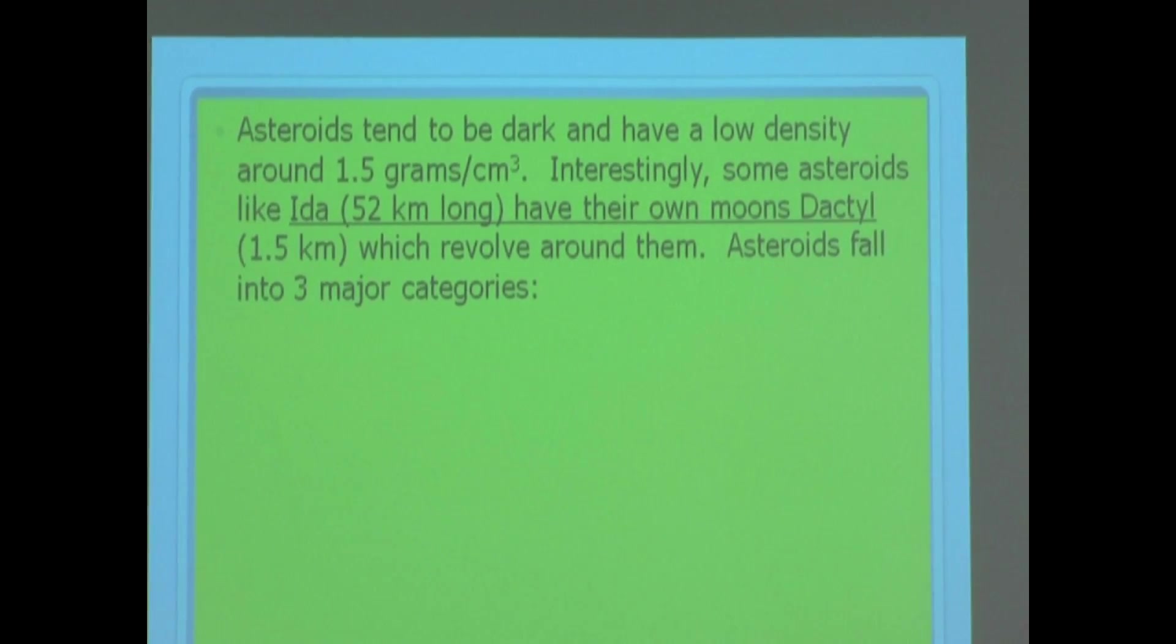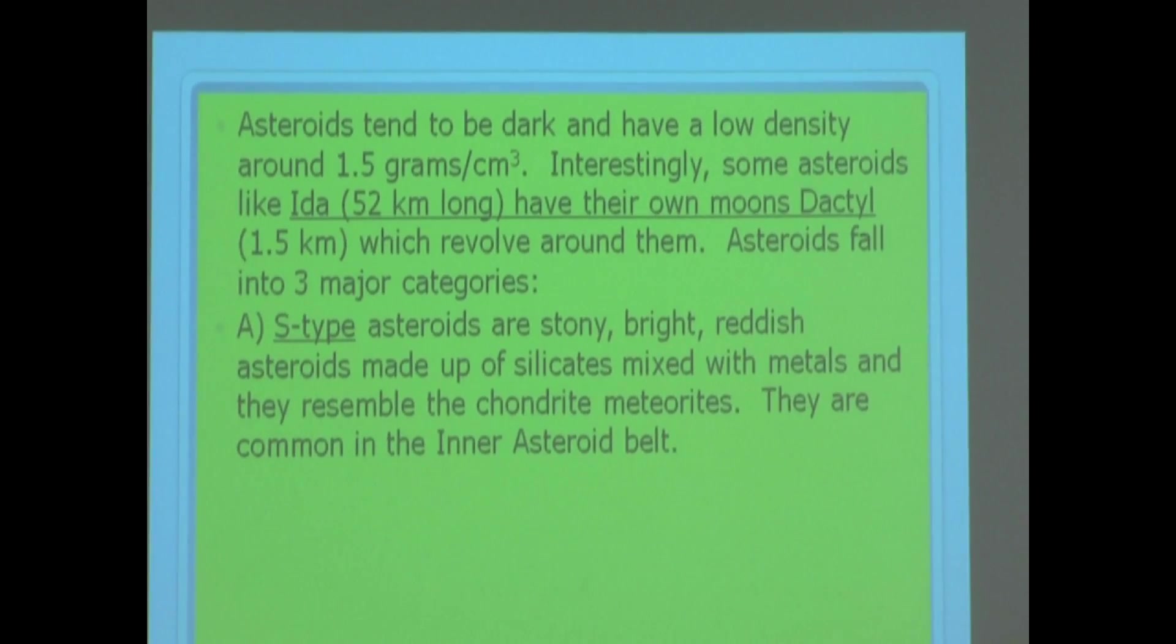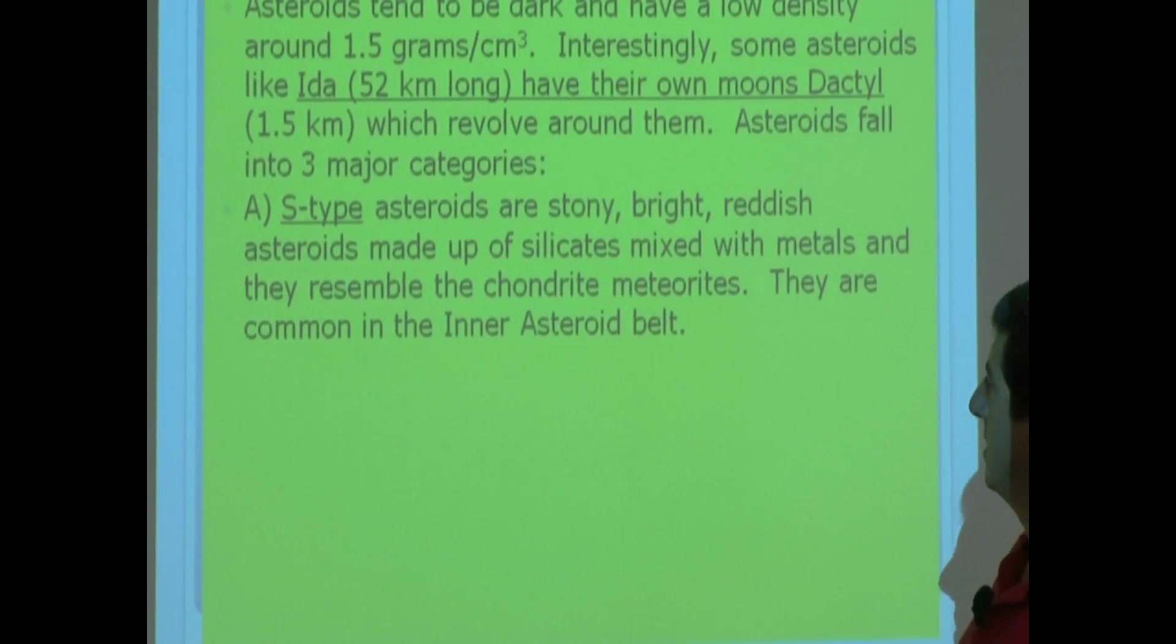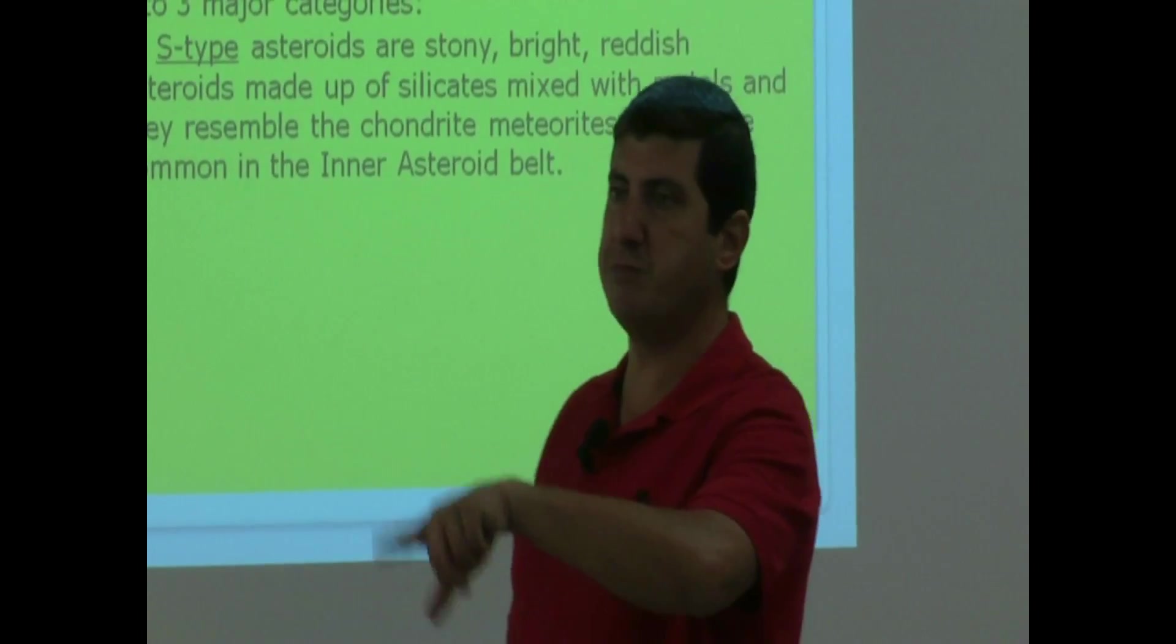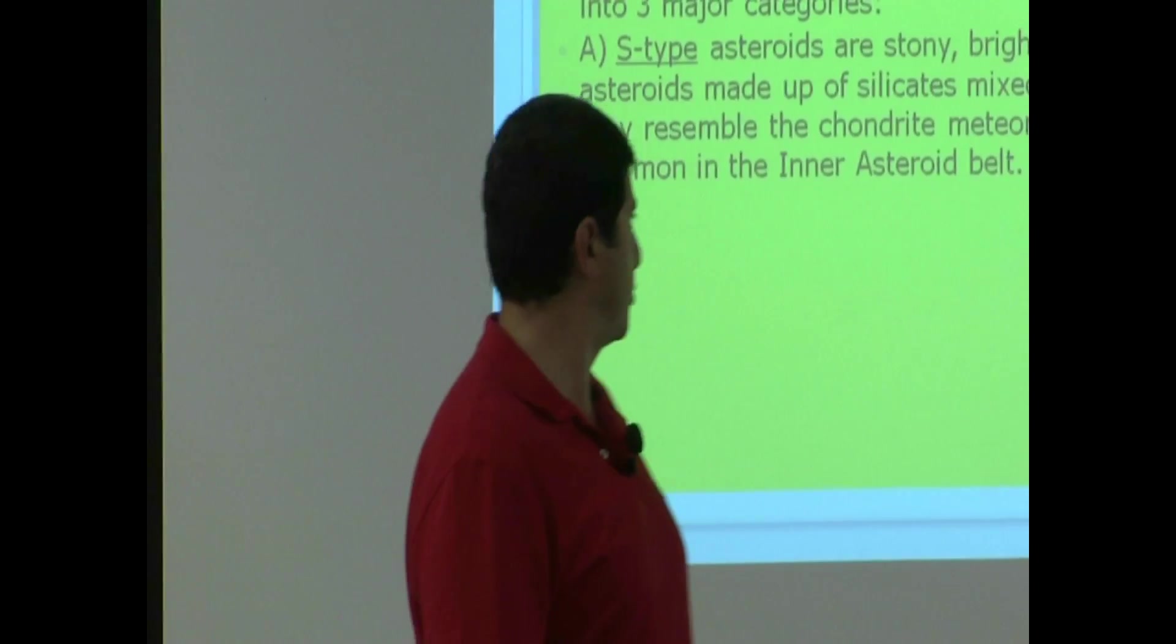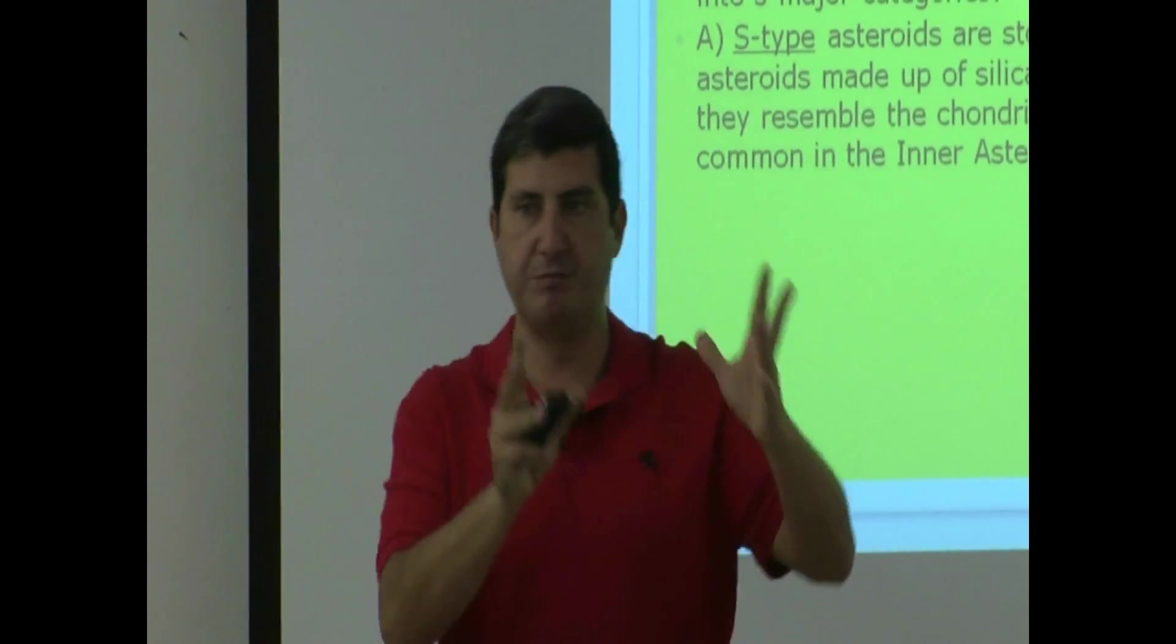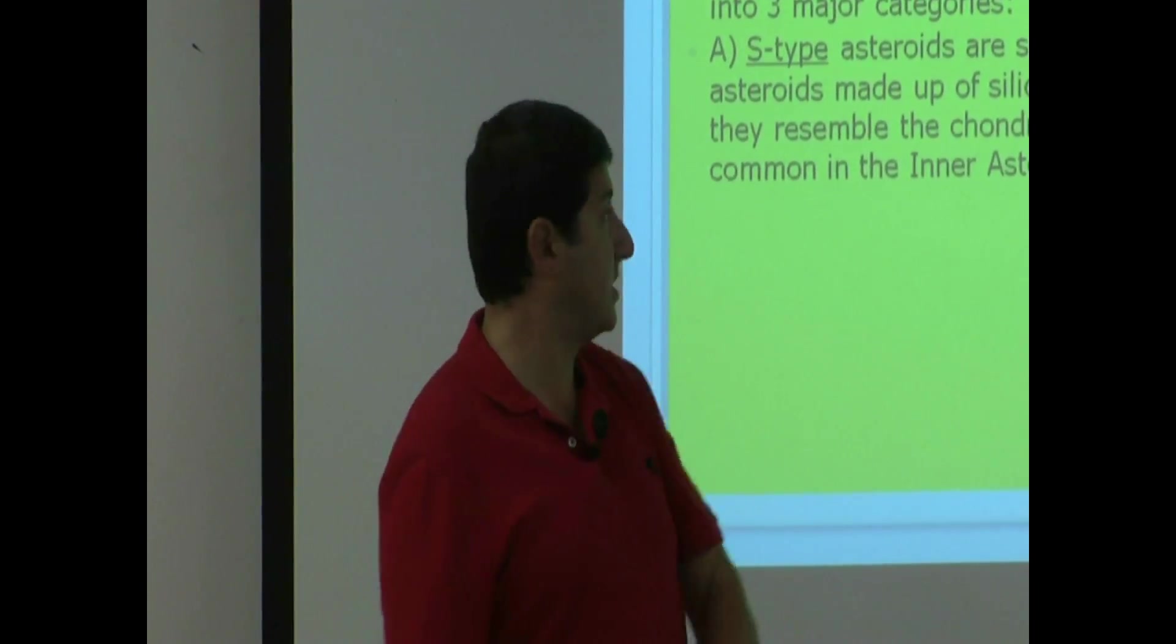Asteroids fall into three major categories. S-type asteroids are stony. In comparison with the other ones, they're brighter. So, stony, bright, reddish asteroids made up of silicates mixed with metals, and they resemble the chondrite meteorites. So, remember the stony meteorites we talked about? They have chondrules in them. These ones resemble those. They are common in the inner asteroid belt. So, if you take the asteroid belt, they're going to be divided into three subsections. Inner, middle, outer. The stony meteorites are in the inner asteroid belt.